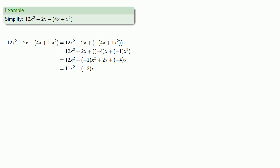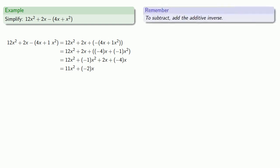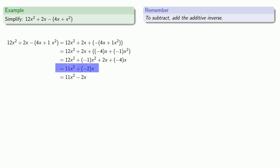This is a perfectly good final answer. However, there's one more thing we might want to do, which is mostly a matter of style. We can write plus the additive inverse, but we prefer to write final answers without that notation. Since adding an additive inverse is the same as subtraction, instead of 11x squared plus the additive inverse of 2x, we can write 11x squared minus 2x. The first form is a perfectly good final answer; the second form is stylistically better.